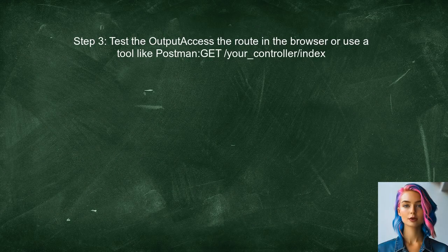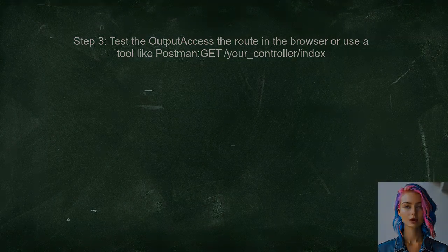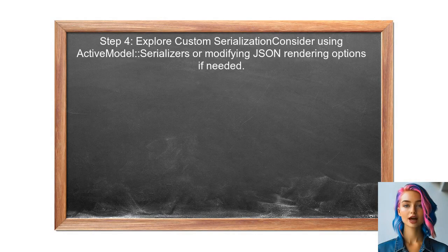After updating the controller, the user should test the output by accessing the corresponding route in their application. This will allow them to see if the JSON is formatted correctly. Finally, if the output still does not match the desired format, the user may need to explore using a custom serializer or modifying the JSON rendering options in Rails.